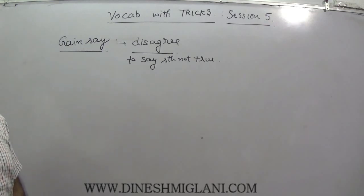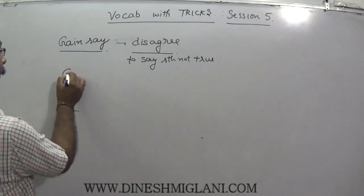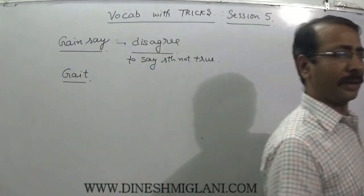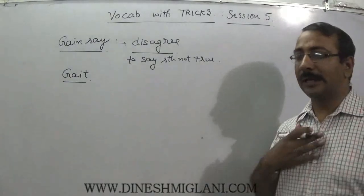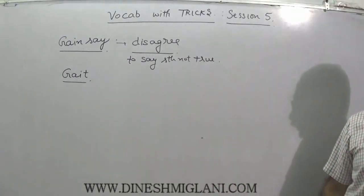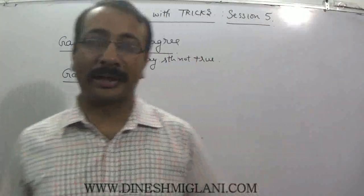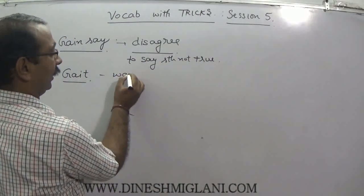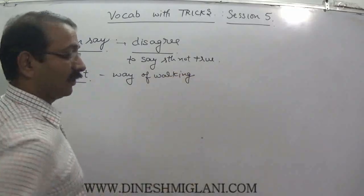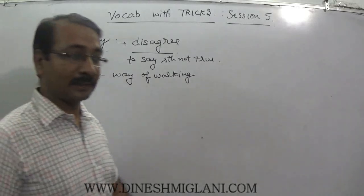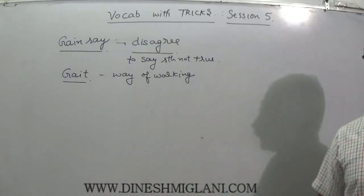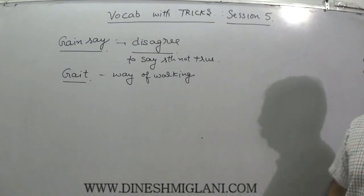Next word is gait, G-A-I-T. When the word gait comes to mind, think of India Gate — I walked from my home to India Gate. So gait also means chaal, or way of walking. That is primarily the meaning of gait — way of walking. In a fashion show, girls walk on the ramp; that is their gait, their way of walking on the ramp.